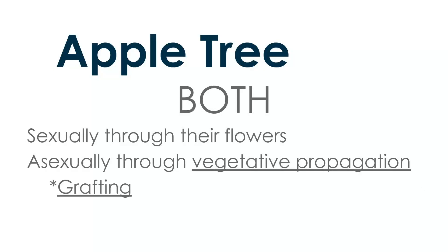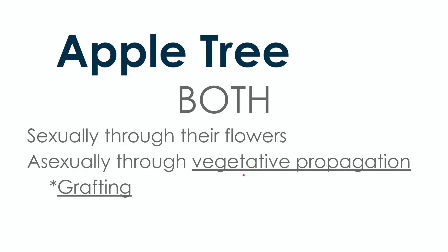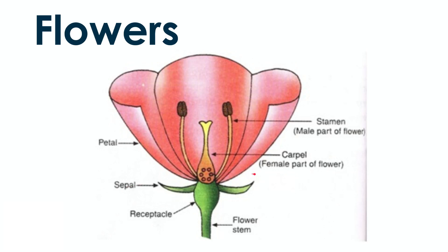Let's talk about what vegetative propagation is. First, a quick review of how flowers are sexual organs. Most flowers have both a female part in the middle and a male part — the little brown things that produce pollen. A bee lands on the flower, picks up pollen from one flower, flies to the next, and deposits that pollen onto the female part.